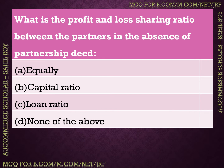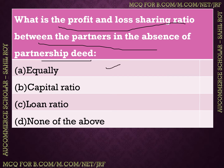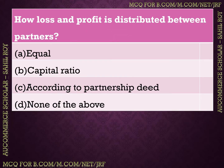The next question: what is the profit and loss sharing ratio between partners in the absence of a partnership deed? The partnership deed is essentially the partnership agreement. If there is no partnership agreement, the options are: (A) equally, (B) capital ratio, (C) loan ratio, (D) none of the above. The correct answer is Option A — profit and loss will be shared equally.